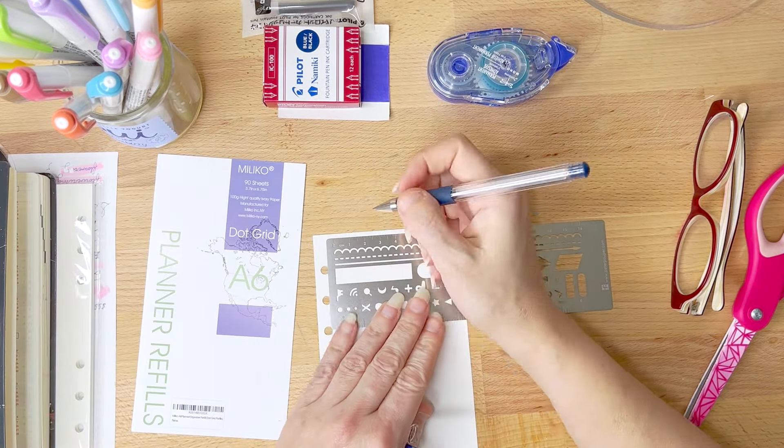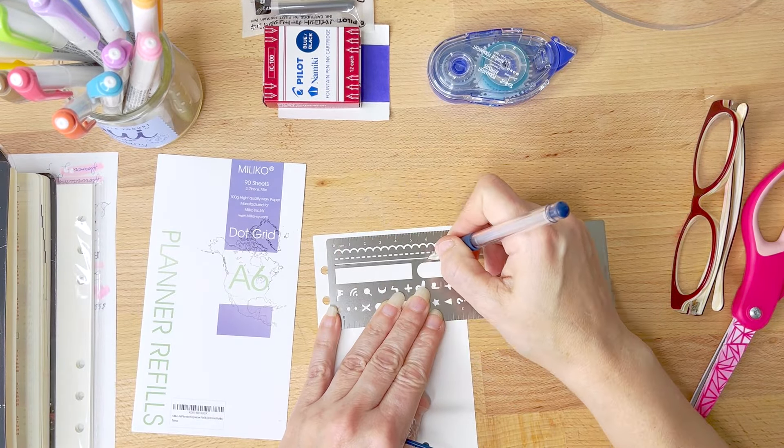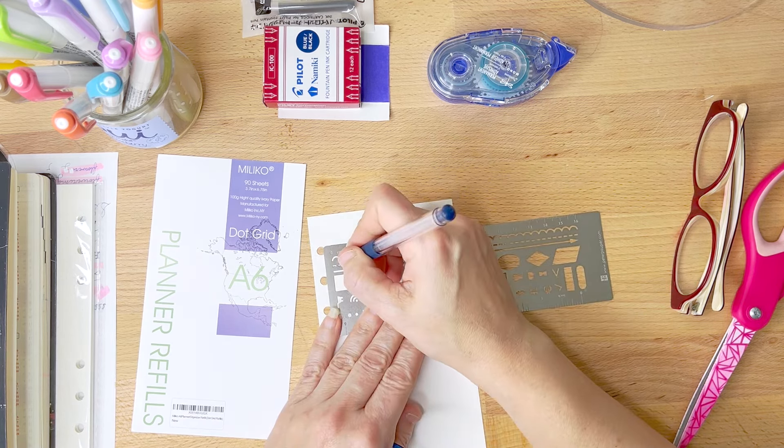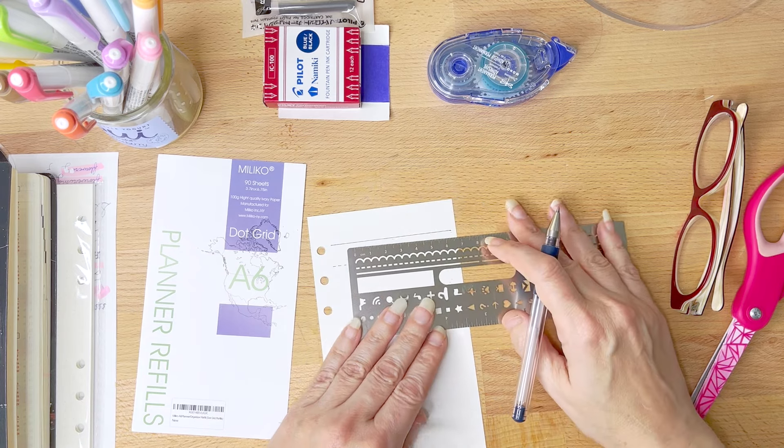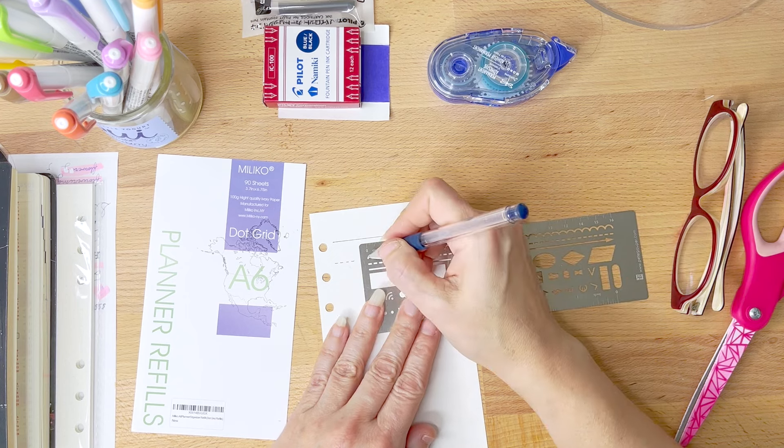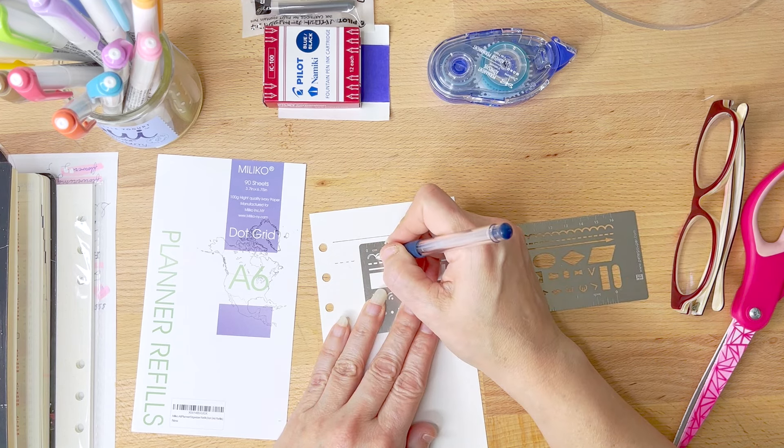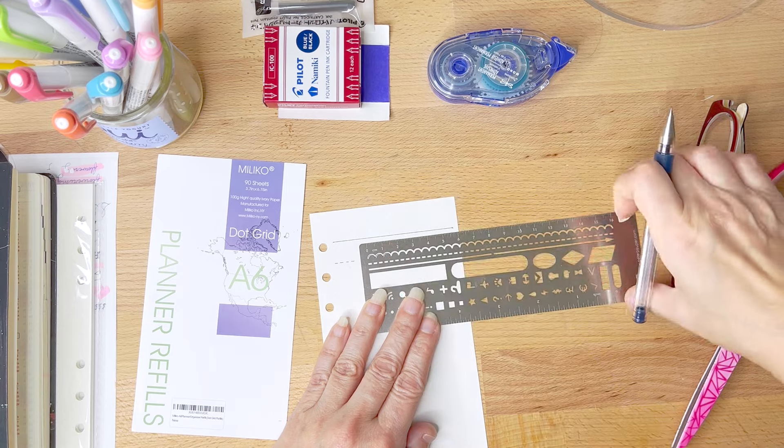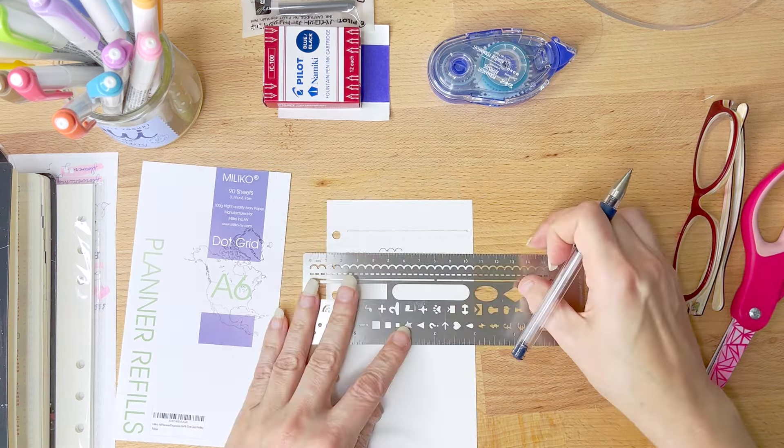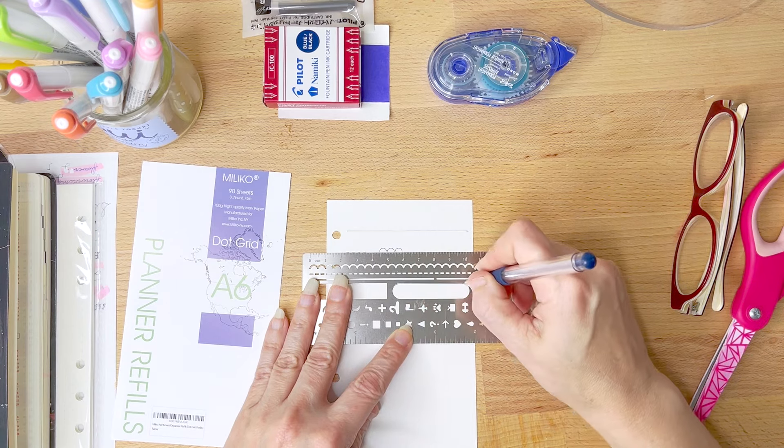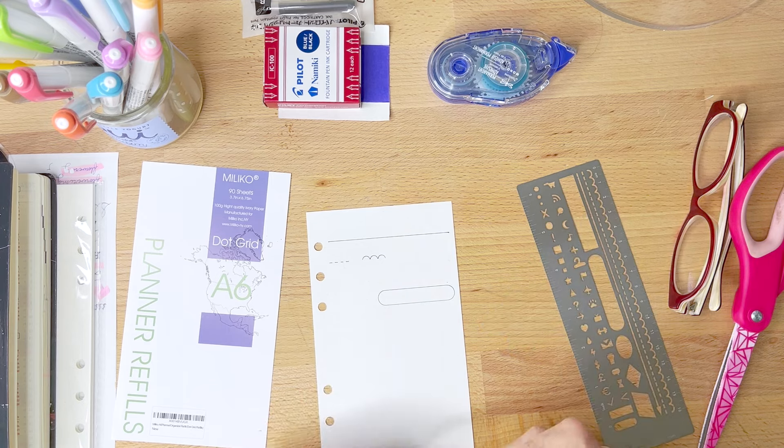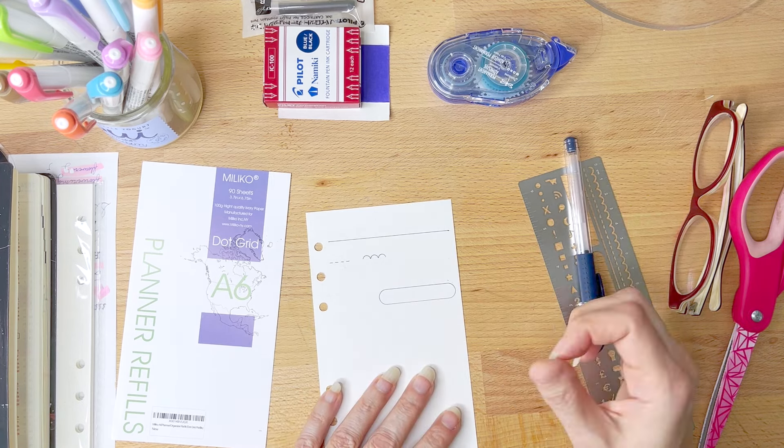So first up I am going to test it out on the Maliko planner refills, and this is actually the paper that I've started using in my commonplace binder, and I will be sharing that in a future video, but I'm getting off topic. Basically, as I expected, this Uniball Signo works really well on this paper, there's no show through on the other side, and the stencil works perfectly.